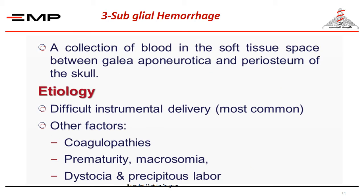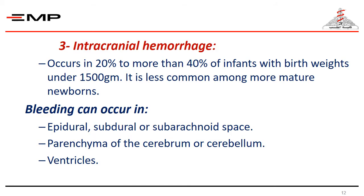Number three: subgaleal hemorrhage. This is a collection of blood in the soft tissue space between the galea aponeurosis and the periosteum of the skull. The etiology is similar, but coagulopathy must be suspected, such as vitamin K deficiency, shoulder dystocia, or prematurity, which makes it more common.